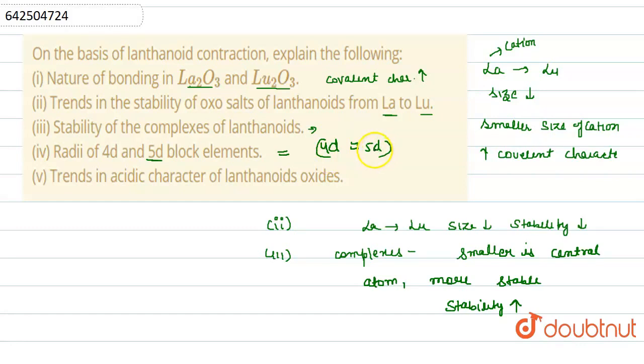The last one is trends in the acidic character of the lanthanoids. As we move down the group, the covalent character increases. That's why the acidity of the lanthanoids also increases.